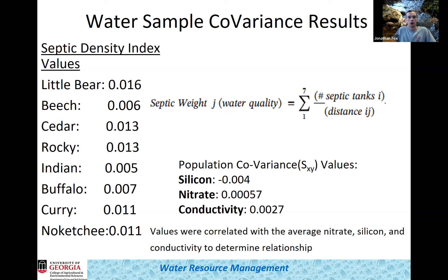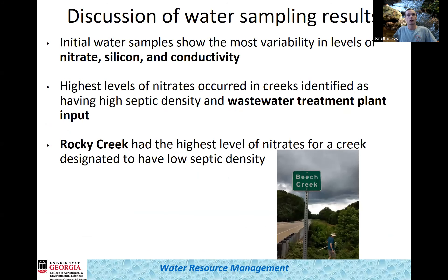The water quality parameters were correlated with the septic tank density index values, yielding population covariance values. We found two positive correlations: for nitrate and conductivity, as the septic tank density index increases, so do nitrate and conductivity levels — indicating that higher septic tank density is making the water slightly more polluted. The highest nitrate levels occurred in the high septic tank density creeks and in Cedar Creek, which is downstream of the wastewater treatment plant.